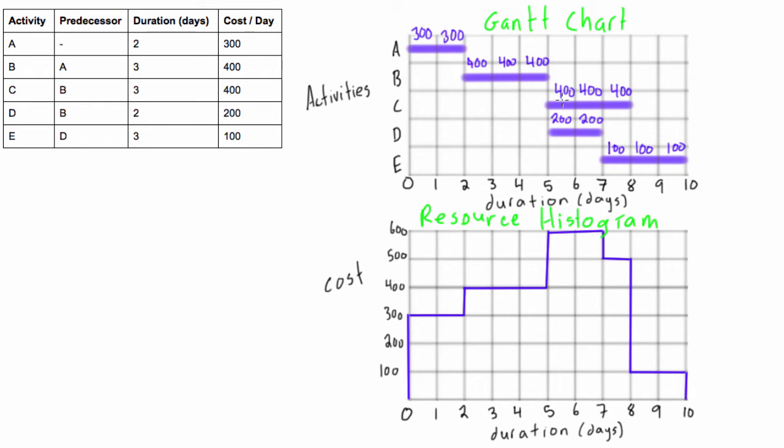It goes on and then when we get over to day six and seven, we have two activities happening at once, so we add those costs to get the total project cost per day. For example, we had $400 plus $200 happening on this day six here and so we're getting $600 on our resource histogram.